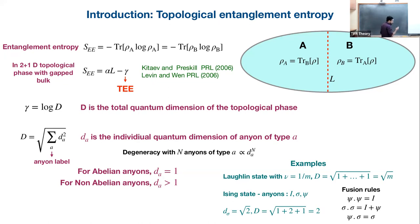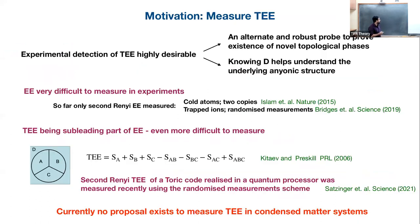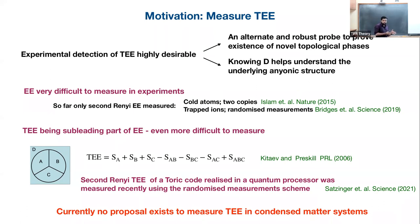The motivation is: can you measure this topological entanglement entropy? Can you measure it? Actually, if you think about it, it's very difficult. Entanglement entropy itself is a very difficult quantity to measure in experiments. So far there have been about two or three instances of measuring it — in cold atom systems with trapped ions. And topological entanglement entropy, the subleading part, is even harder to measure. There's also an ambiguity in defining a subleading part to something coarse like L.